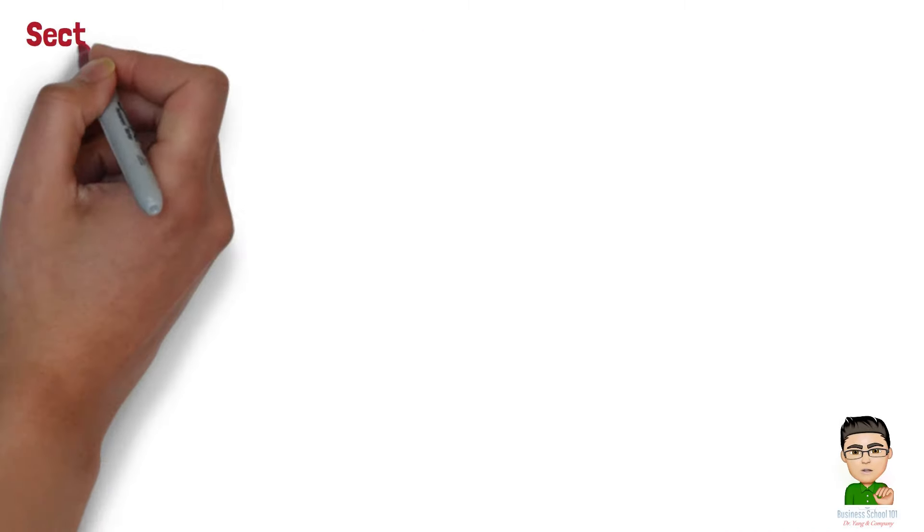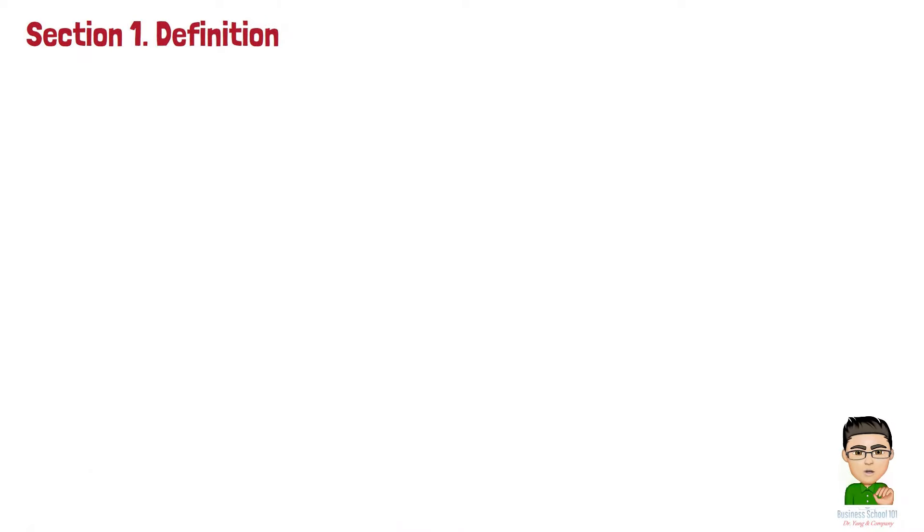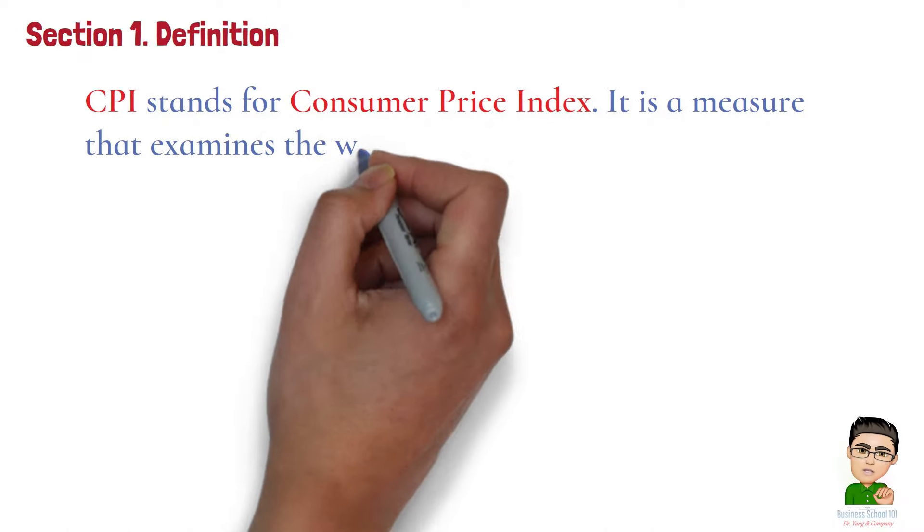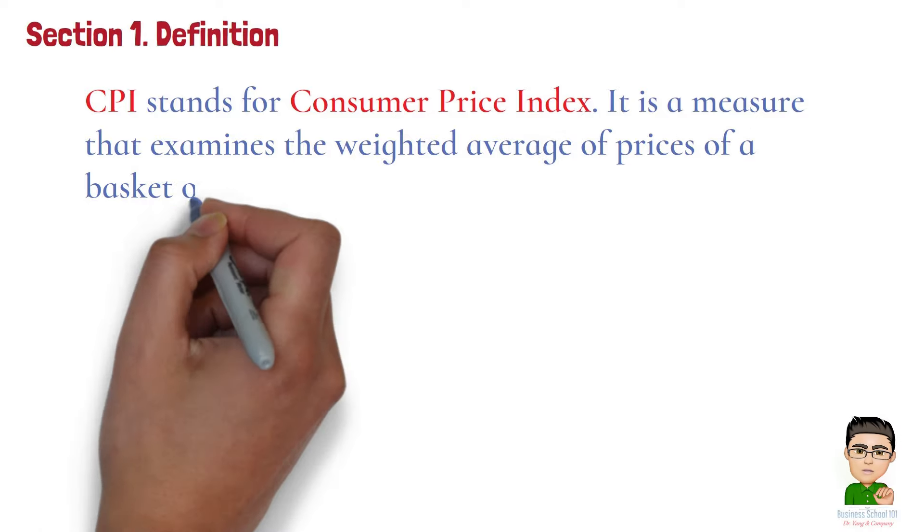Section 1. Definition. CPI stands for Consumer Price Index. It is a measure that examines the weighted average of prices of a basket of consumer goods and services.